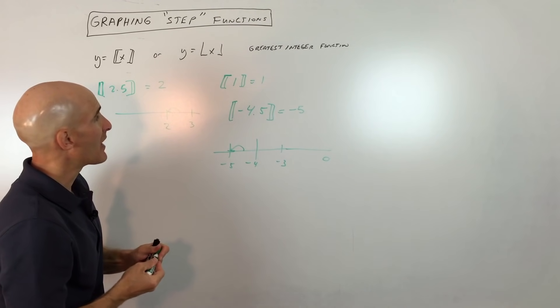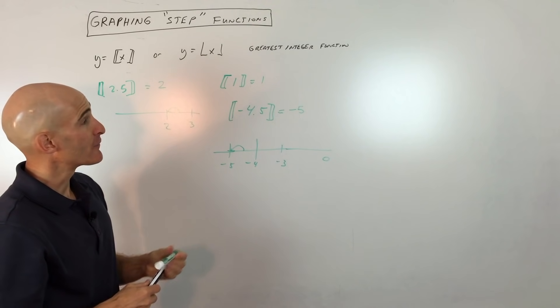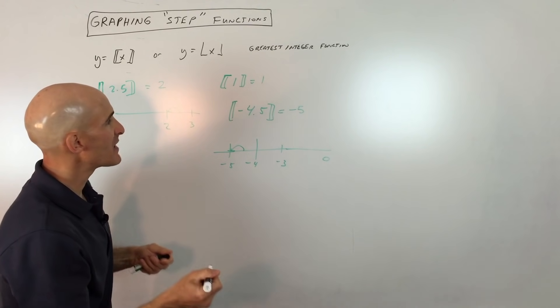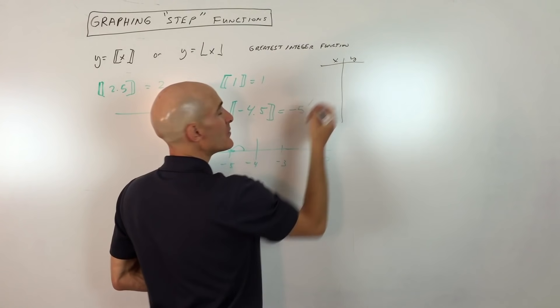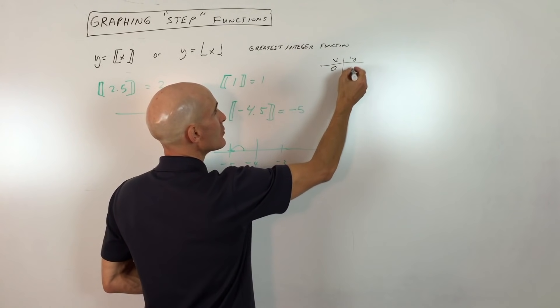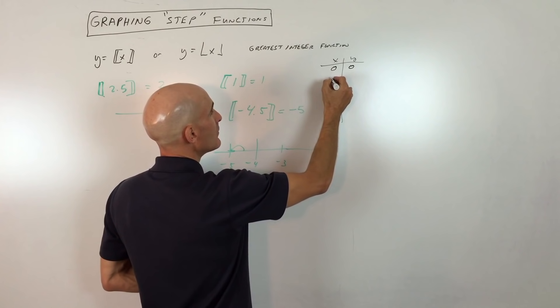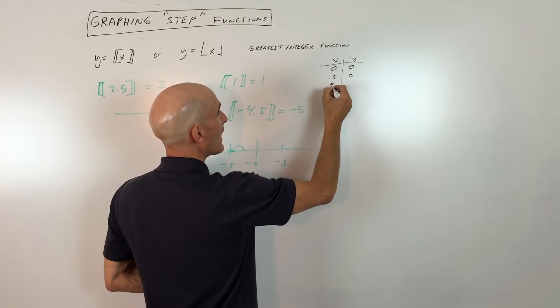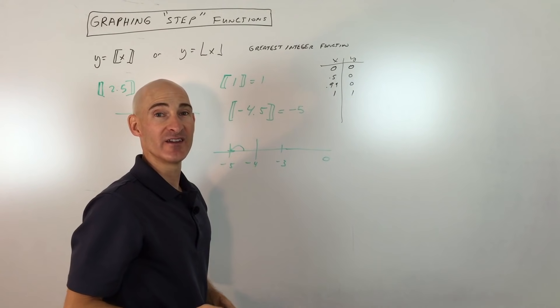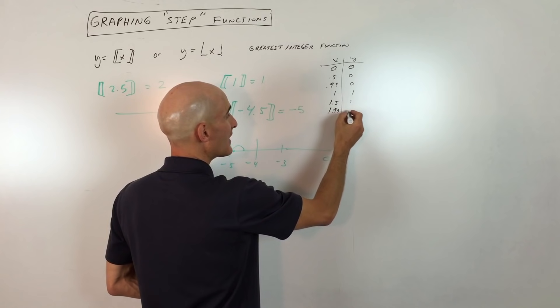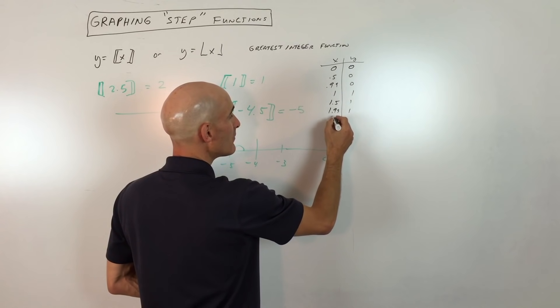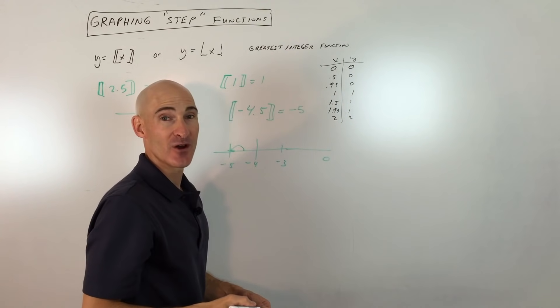So the next thing is we're going to talk about how to graph these step functions. The first thing I would recommend doing is let's just make a table of values. So I'll make a little table. I'm going to pick some integer values like 0, that's going to round down to 0. 0.5, that rounds down to 0. 0.99, still 0. 1 is going to be 1. 1.5 we round down to 1. 1.999, we round down to 1. But 2, we're going to be at 2, and so on.